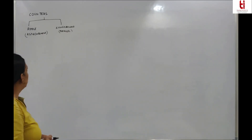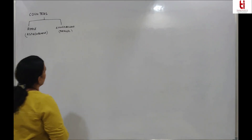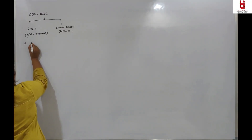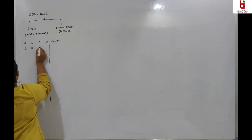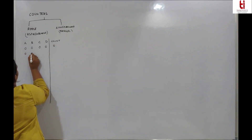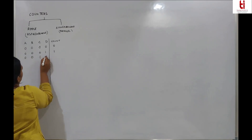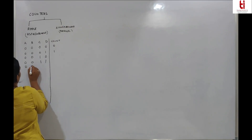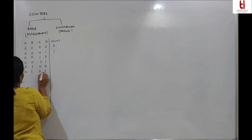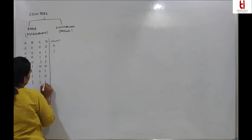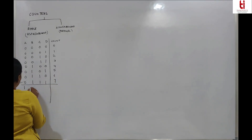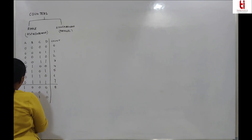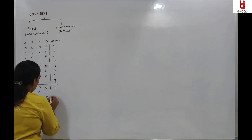We will start with the first counter, which is a ripple counter or asynchronous counter. If I draw a counter, counting starts with 0 0 0. It is a 4-bit counter, so it can count up to 15. All the inputs are 1 1 1 1.